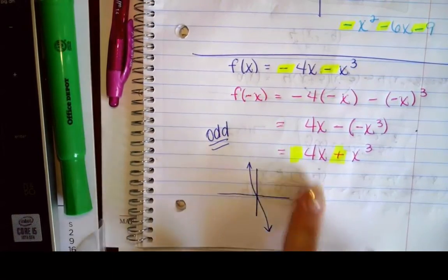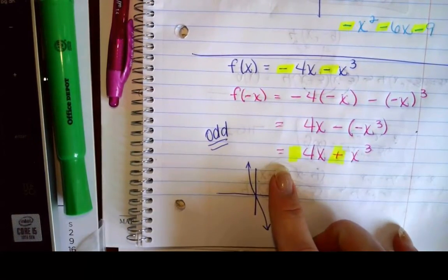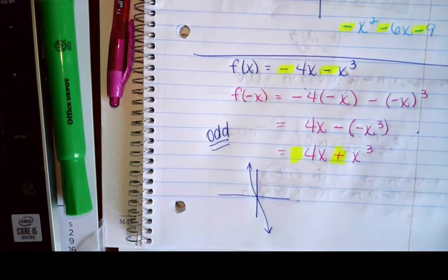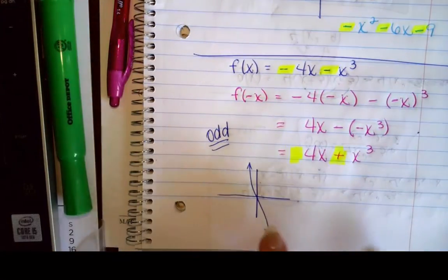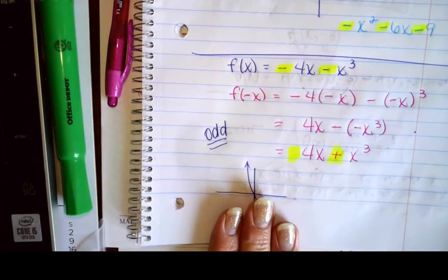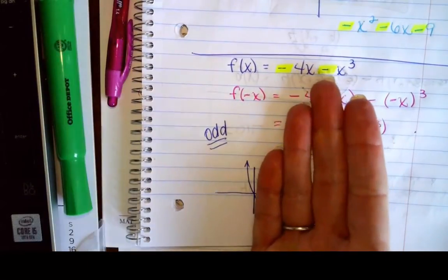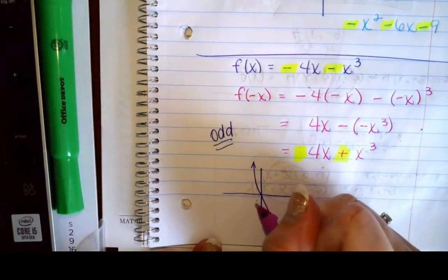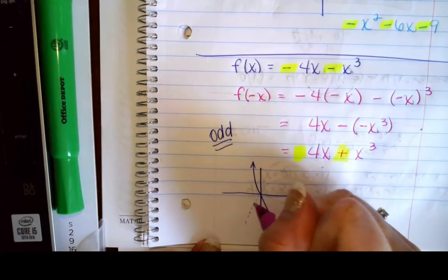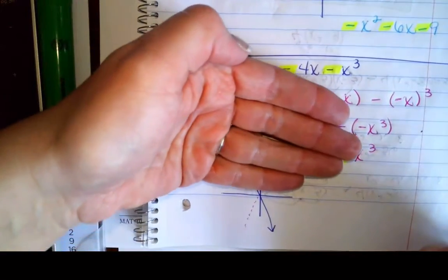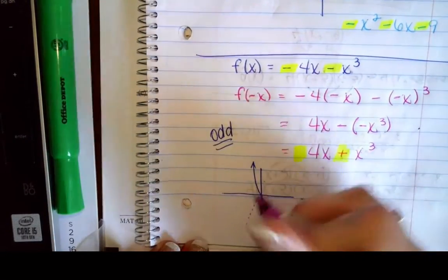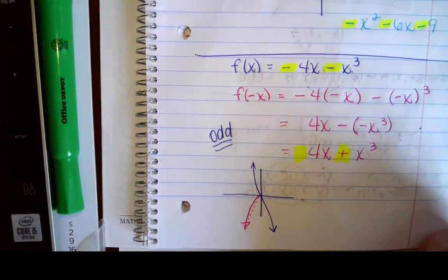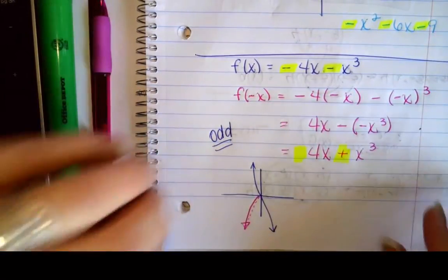Let me draw it for you. When I draw this function, if I shove in zero I get zero. If I fold it on the y-axis, this little arm down here will now be laying in this other quadrant. Then fold it again — fold this down — and this arm is now laying on top of that arm. So it is symmetric about the origin, confirming it is an odd function.